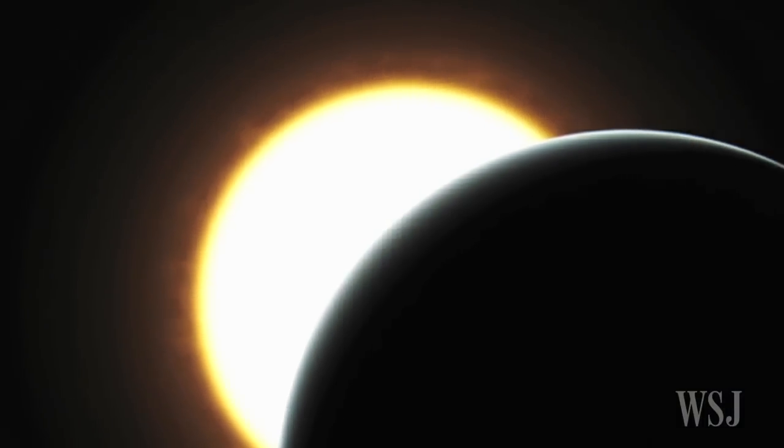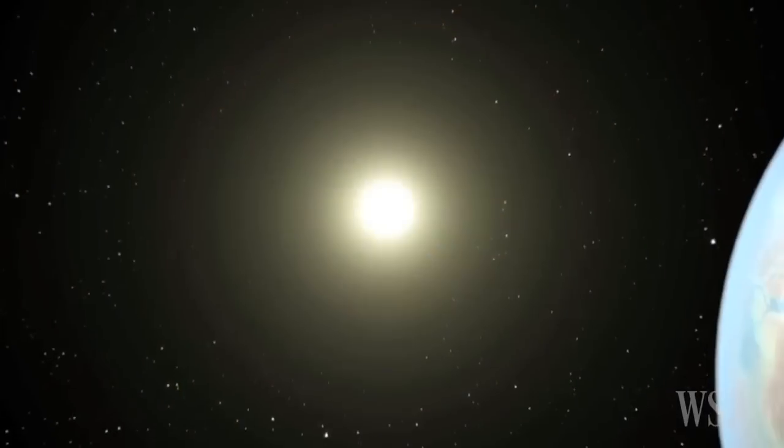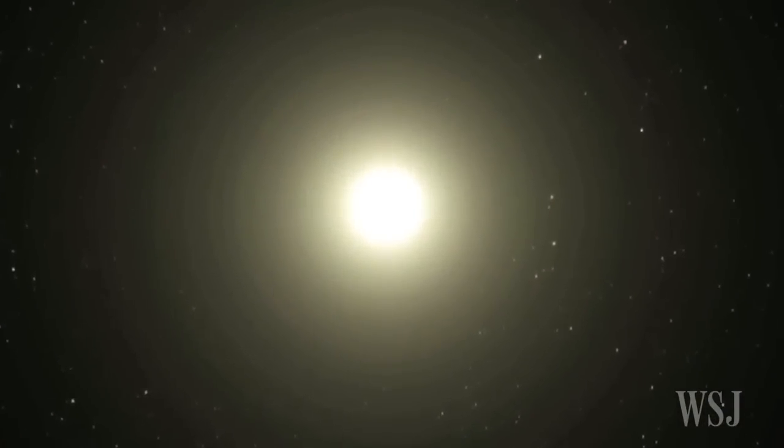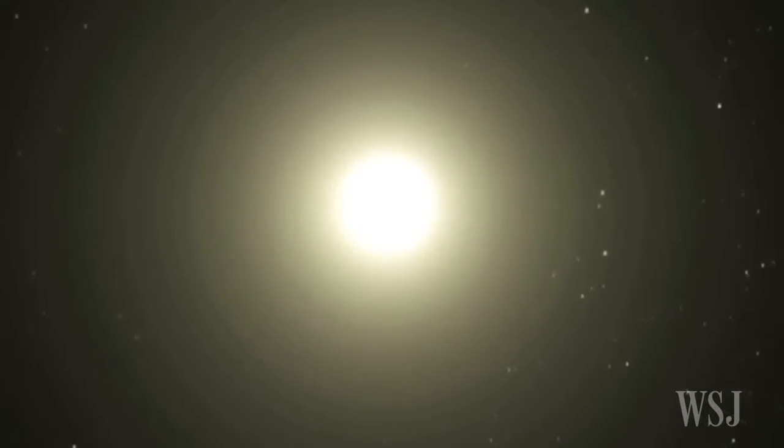And while Kepler-452b is 5 percent farther from its host star than the Earth is from the sun, it gets similar light because the star is 20 percent brighter than our sun.